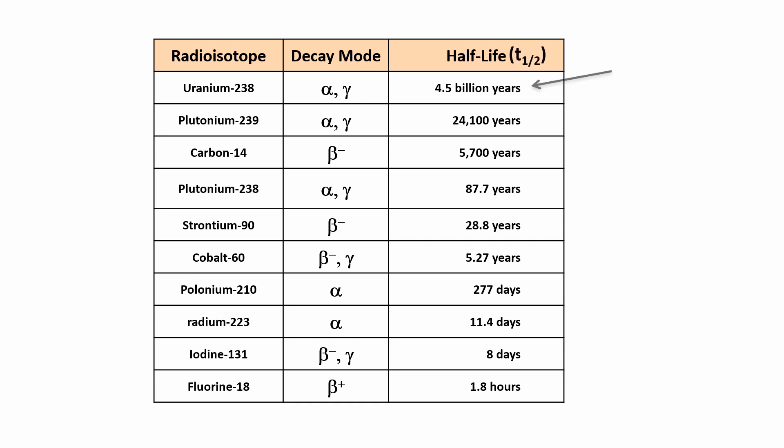As you can see, uranium-238 has a very long half-life, so a sample of it gives off very few alpha particles and gamma rays per second, and it lasts a very long time.